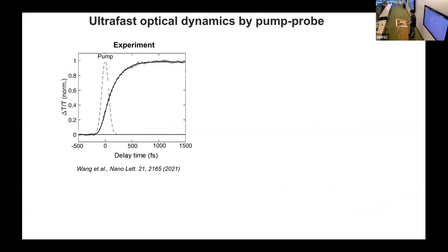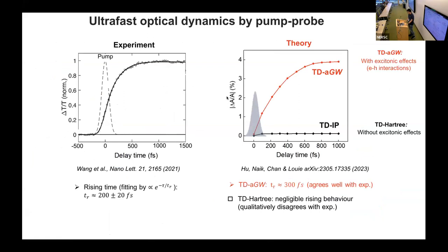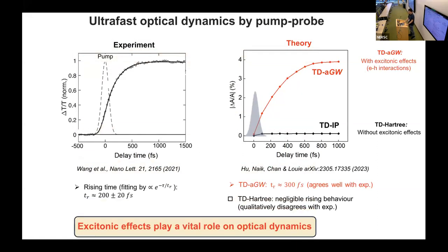Looking at the experiment results: fitting the rising behavior with an exponential, we find that the optical dynamics timescale is about 205 femtoseconds. In our simulation using the TD-adiabatic GW method — which includes the electron-hole coupling or excitonic effects — the red curve agrees very well with experiment, quantitatively giving a result of about 305 femtoseconds. If we neglect the electron-hole coupling and get the black curve, it qualitatively disagrees with experiment. This tells us that the excitonic effect plays a very important role in the interlayer optical dynamics.